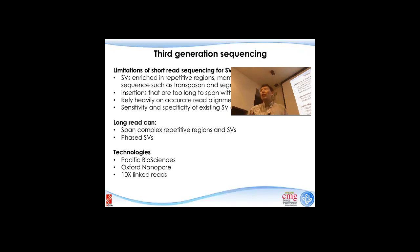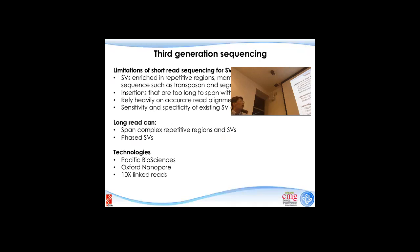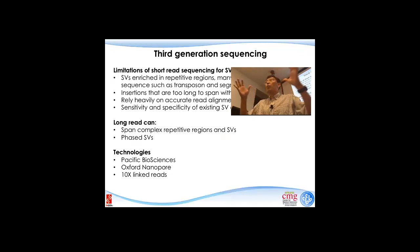Using short-read sequencing like Illumina for structural variation identification is clearly not the best way — there's a lot of prediction involved, and many things we cannot find. But we talked about using long reads — PacBio, nanopore sequencing, and also 10X Genomics, where molecular barcodes on much-extended regions enable local assembly. Those are also possibilities for better structural variation detection.